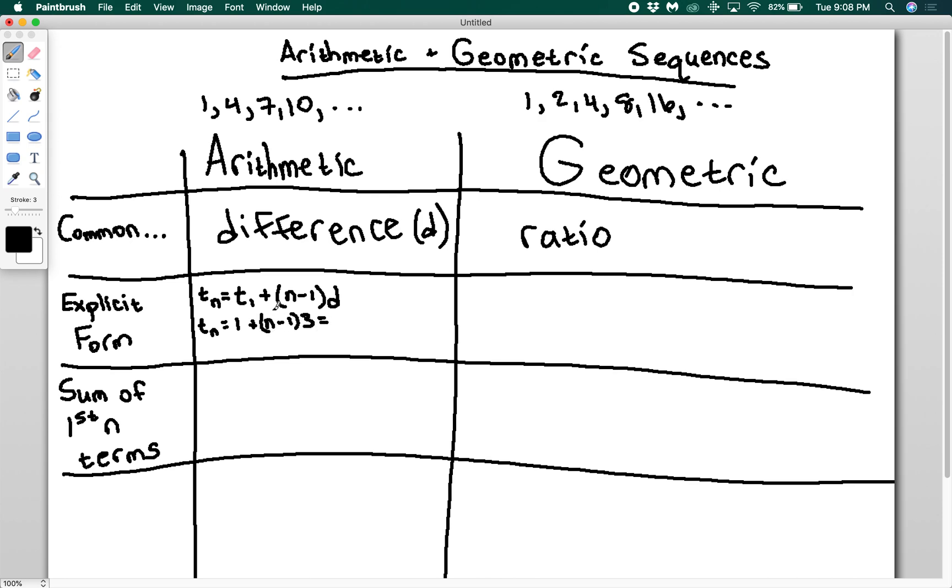So this is going to be equal to, I'm going to have 3n minus 3 plus 1, so 3n minus 2.